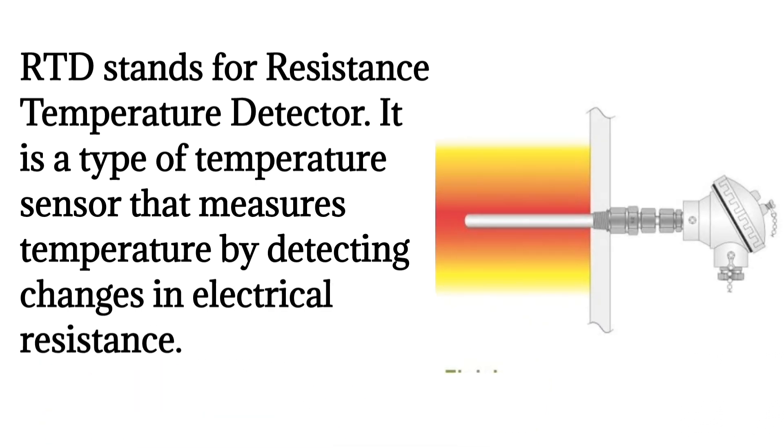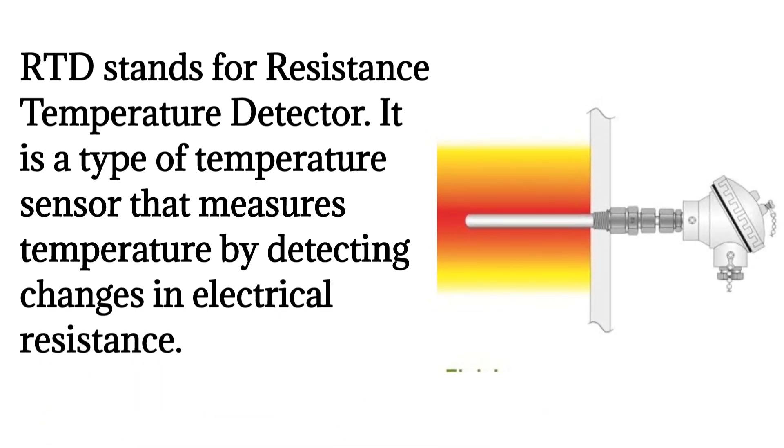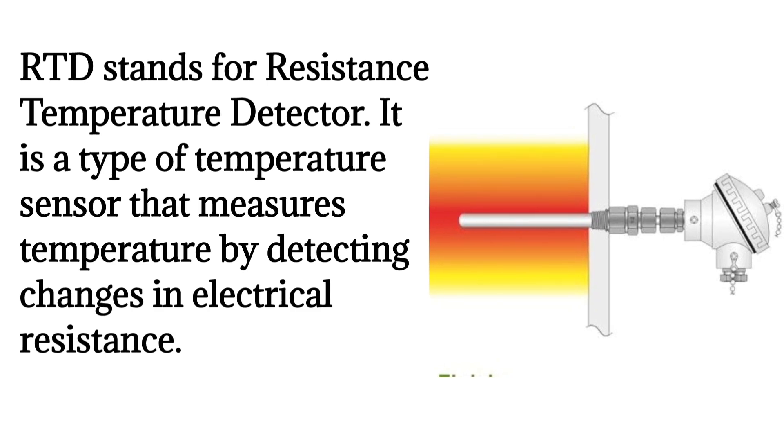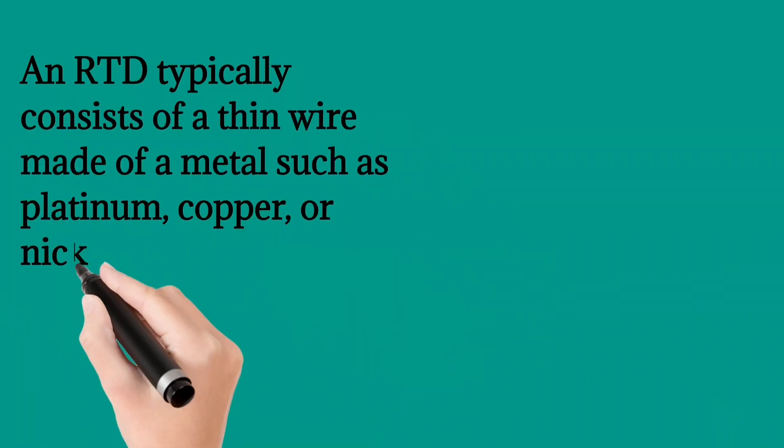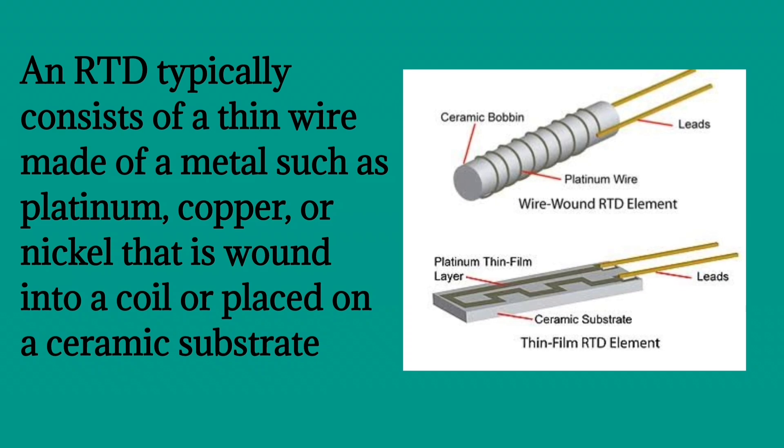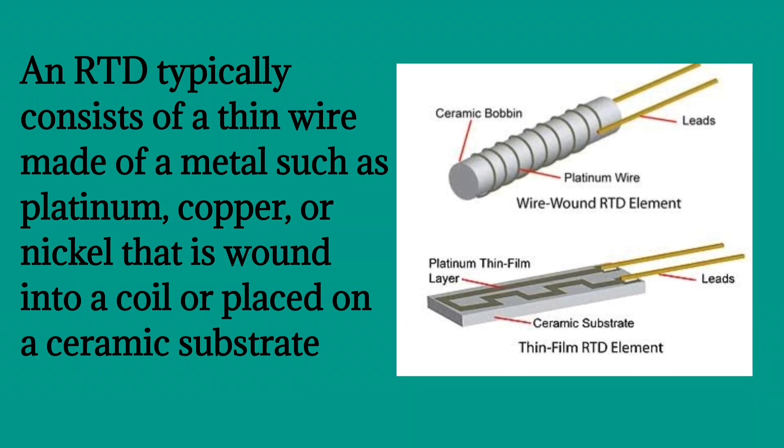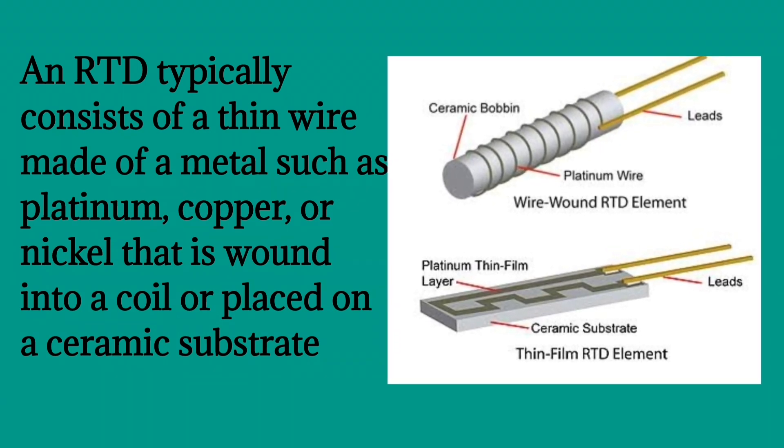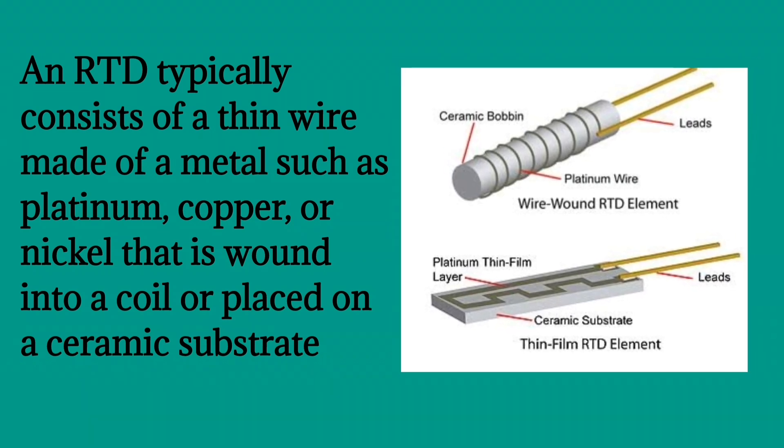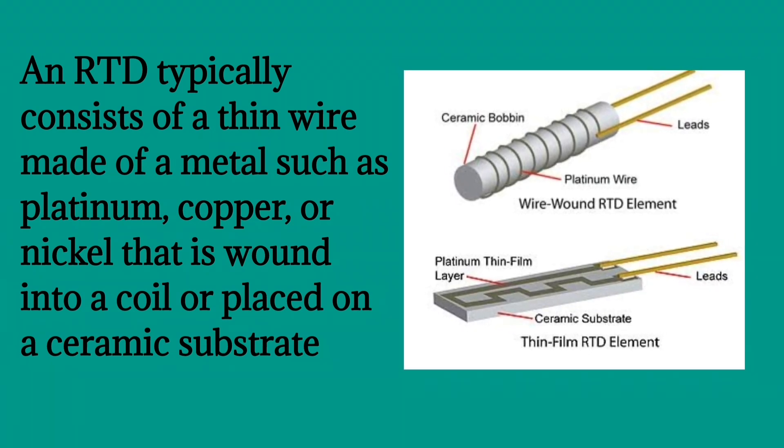It is a type of temperature sensor that measures temperature by detecting changes in electrical resistance. An RTD typically consists of a thin wire made of a metal such as platinum, copper, or nickel that is wound into a coil or placed on a ceramic substrate.